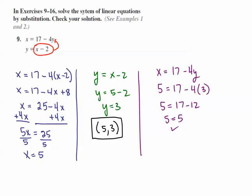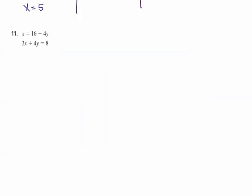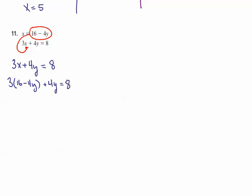We'll go on to the next example. In exercise 11, we have x is equal to 16 minus 4y, and the next equation doesn't have an x or y by itself. So we want to use this definition of x and replace the x in the second equation with that definition. Starting with the second equation: 3x plus 4y is equal to 8. Replacing x with (16 minus 4y) gives me 3 times (16 minus 4y) plus 4y is equal to 8. 3 times 16 is 48, and 3 times negative 4y is negative 12y.